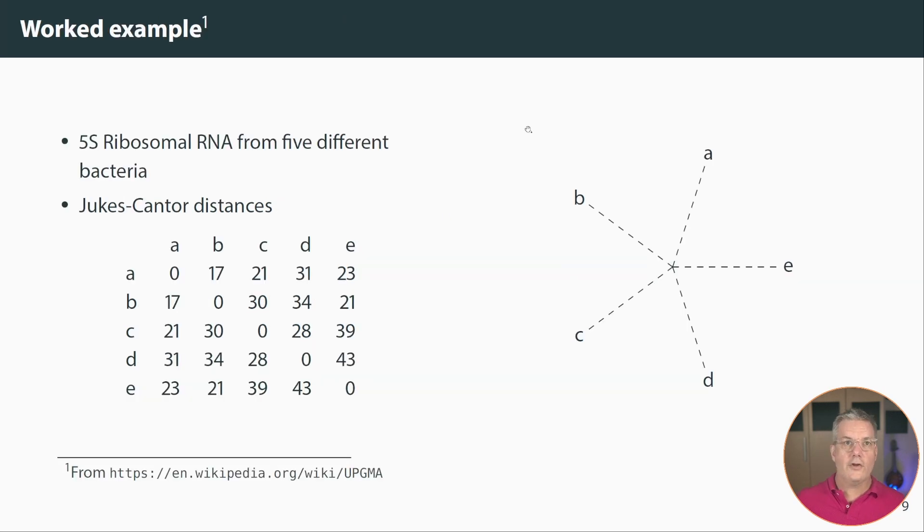And in this example I'm going to use 5S ribosomal RNA from five different bacteria. This is actually the same example that was used in the UPGMA video in this series so that if you watch both videos you can compare the results and see how the trees are different. We start with all of the leaves, all of the sequences arranged on this star tree. So in this representation the dashed lines are going to represent an unresolved branch. We don't know anything about the branching order. We don't know anything about the branching lengths. And so these are basically just emanating from a common ancestor but without any knowledge of how it occurs.